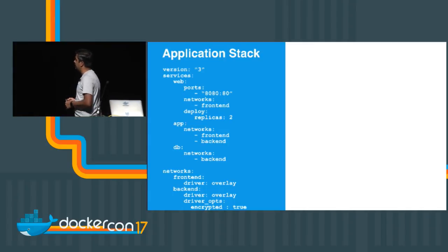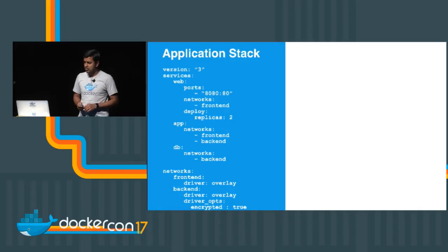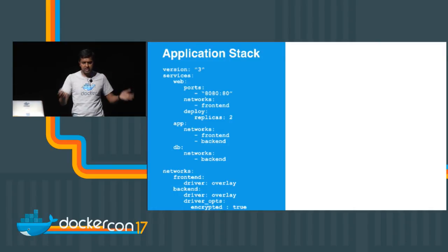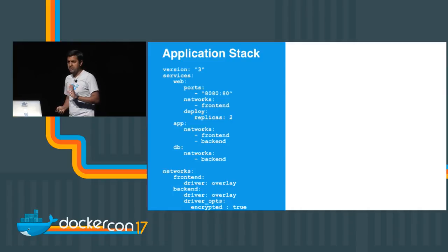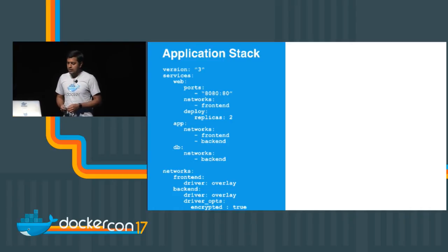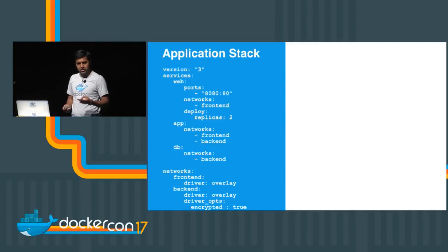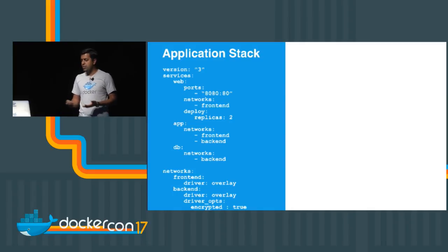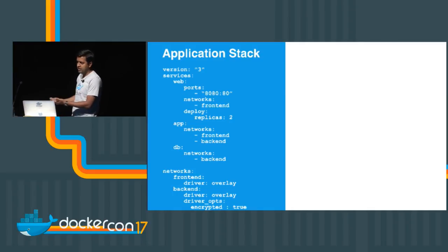Let's start with a simple application stack. For simplicity, I'm concentrating purely on the network aspects. If you've seen a Compose file, it will typically look like this. We have a version tag and services: web, app, and DB. The web service is exposed on port 80 and published on port 8080 on the cluster. It's connected to one network called the front-end network and has a replica count of two, meaning this service will have two tasks on the cluster.